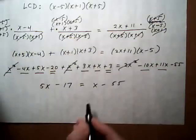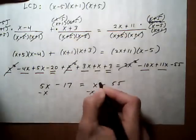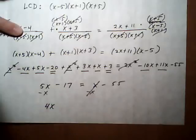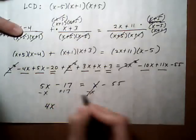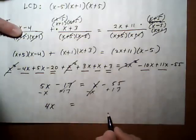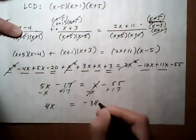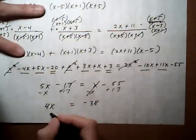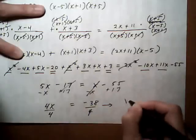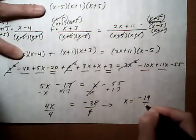And then we want to get x's left. Subtract x on both sides. Cancels out. And that gives us 4x. And get the numbers to the right. So I add 17 to both sides. Cancels out. And get equal to minus 55 plus 17 would be negative 38. Dividing by 4 to get our final answer. We get x is equal to, and we reduce it to be minus 19 over 2.